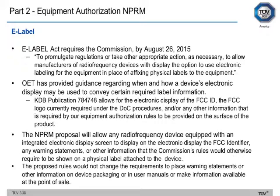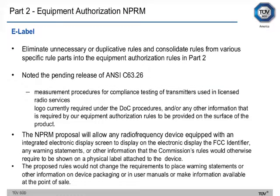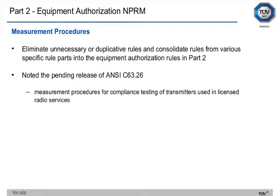The e-label was another significant part of the rulemaking proposal. The E-Label Act required the commission by August 26, 2015 to allow manufacturers of devices with a display the option to use electronic labeling in place of physical labels. KDB 784748 currently allows electronic display of the FCC ID, logo, and other required information. The proposal will allow any RF device with an integrated display screen to display the FCC ID, warning statements, and other information that would otherwise be on the physical label. The rules do not change requirements to place warning statements on device packaging or in user manuals.